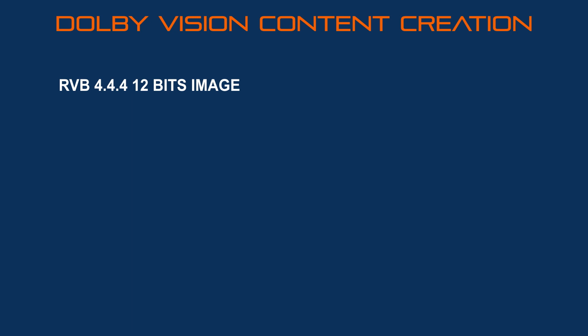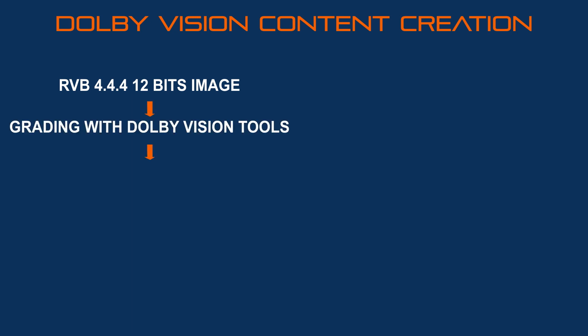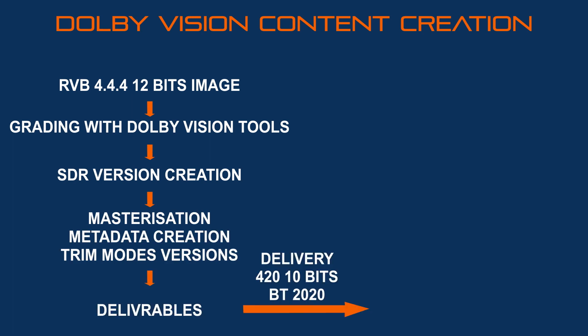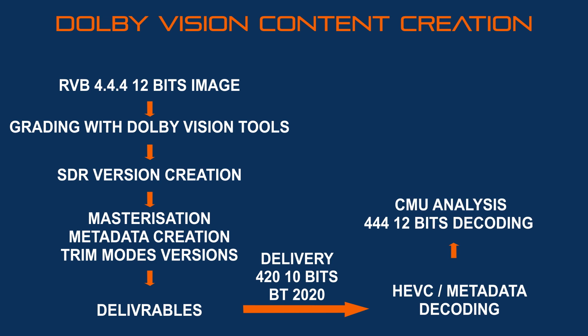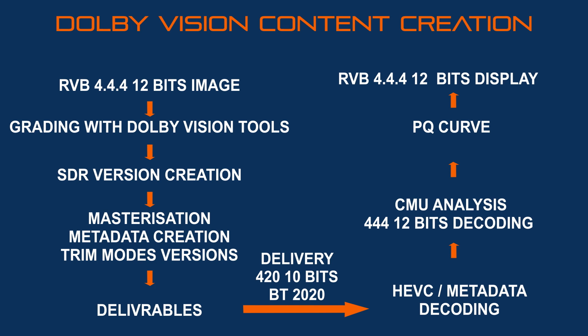The original signal is in 12-bit 4:4:4 — the metadata was created from that, with color information values derived from it. The CMU in your TV set analyzes the metadata. From the 4:2:0 10-bit delivery on your Blu-ray, Netflix, Amazon Prime or wherever, the CMU on your Dolby Vision TV will recognize the metadata, detect that the signal was originally in 4:4:4 12-bit, recognize the associated color information, and display on your device a signal equivalent to 4:4:4 12-bit. Dolby Vision decoding is extremely precise — the CMU restores the signal in the most accurate way and deactivates everything unbeneficial, restoring what was created and approved in the color grading room. That's the magic of Dolby Vision.